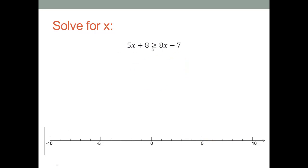Five x plus eight is greater than or equal to eight x minus seven. Let's get our variable terms on the left hand side by subtracting eight x from each side. That gives us negative three x plus eight is greater than or equal to negative seven.